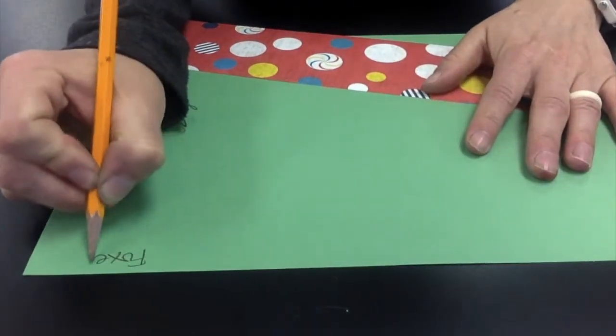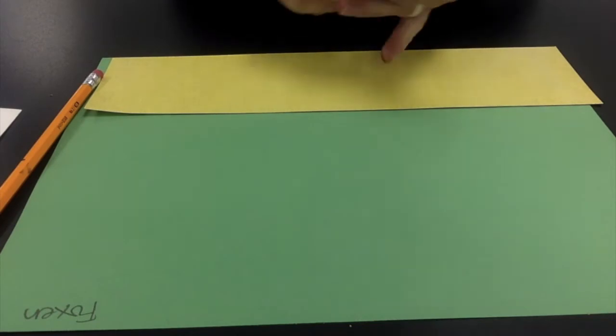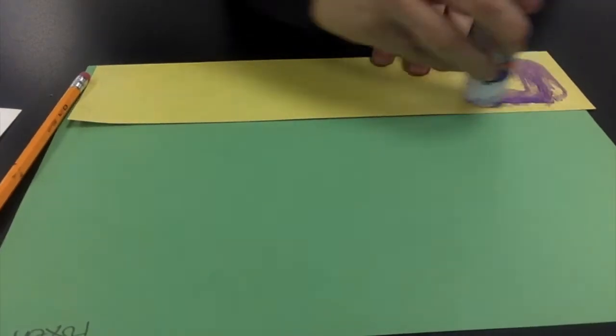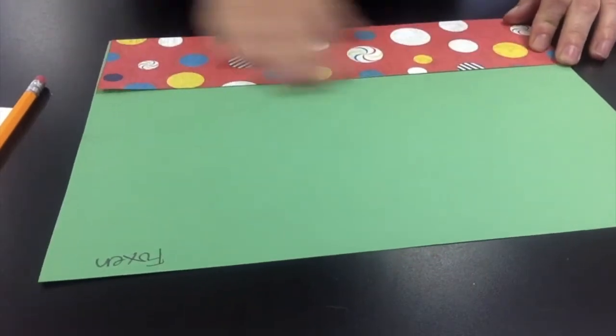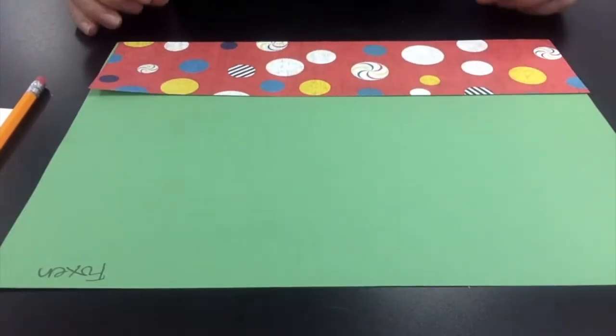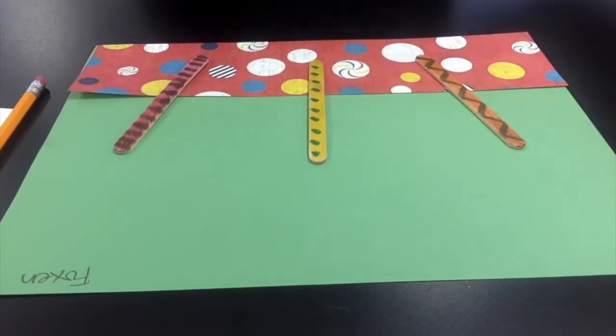Now that my popsicle sticks are ready, I'm going to grab a sheet of paper and a long, colorful strip of paper. Decide which side you like the best and glue down the opposite side so that that will create a table for your lollipops to stand on. I thought this paper looks really great on my background.